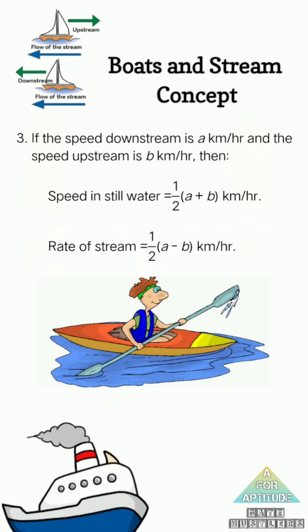The third condition is speed in still water. Speed in still water - you have a stream in still water that will be 0 km per hour speed. This will be stationary. You've been forced to take force by the boat, which means you have to apply speed. So 1/2 (a+b) kilometer per hour. And rate of stream - how do you operate? Now if you are going to the stream, you can move the stream, so the rate of speed is 1/2 (a-b) km per hour.